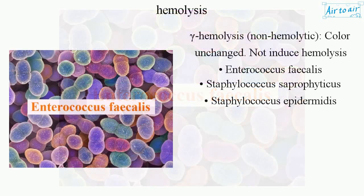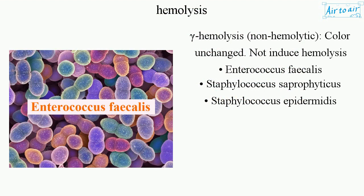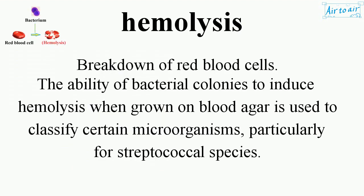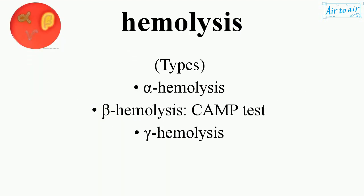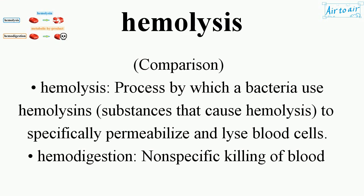Gamma hemolysis is non-hemolytic — the color is unchanged and hemolysis is not induced. Examples include Enterococcus faecalis, Staphylococcus saprophyticus, and Staphylococcus epidermidis.